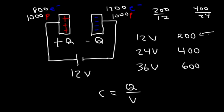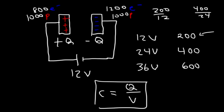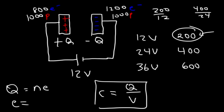Just keep in mind that this is not in coulombs — that's just the difference in electrons and protons. In reality, to calculate C you need the charge in coulombs and then divide by voltage. To do that, it's N times e: the number of electrons multiplied by 1.6 times 10 to the negative 19 gives you the charge Q.